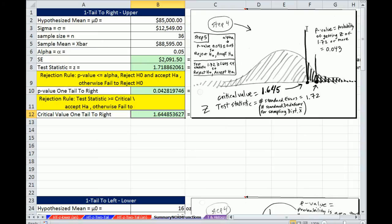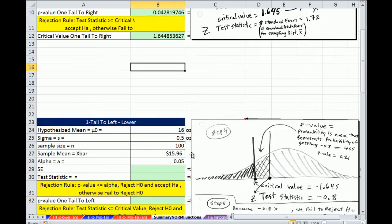That's the hurdle point right there. So if our test statistic is above, then we reject the null hypothesis and accept the alternative. That's one tail right on the upper.